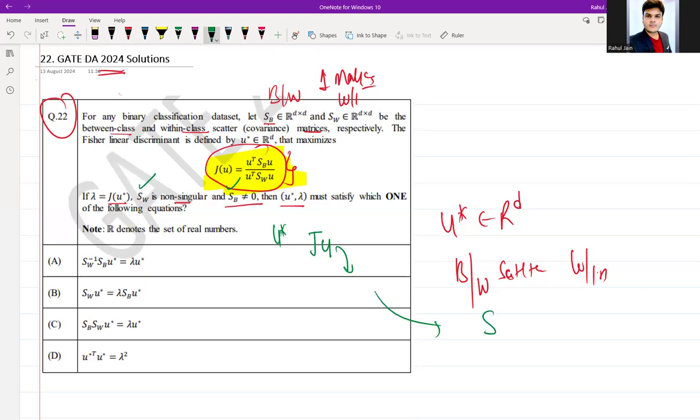I can write Sw inverse Sb u* equal to lambda times u*. This equation, and here lambda is equal to j(u*). Lambda is the eigenvalue which corresponds to u*.